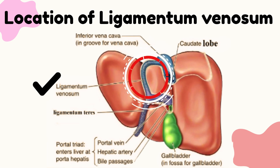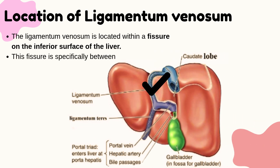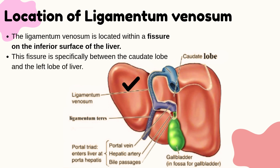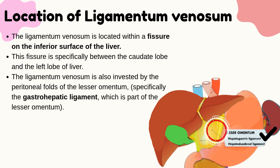The Ligamentum Venosum is located within a fissure on the inferior surface of the liver. This fissure is specifically between the caudate lobe and the left lobe of the liver. The Ligamentum Venosum is also invested by the peritoneal folds of the lesser omentum, specifically the gastro-hepatic ligament, which is part of the lesser omentum.